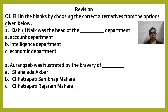The second fill in the blanks: Aurangzeb was frustrated by the bravery of DASH. Option A: Shahjada Akbar. Option B: Chhatrapati Sambhaji Maharaj. Or Option C: Chhatrapati Rajaram Maharaj.